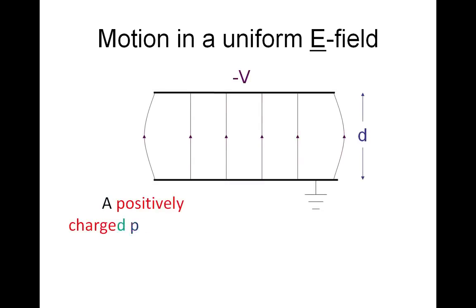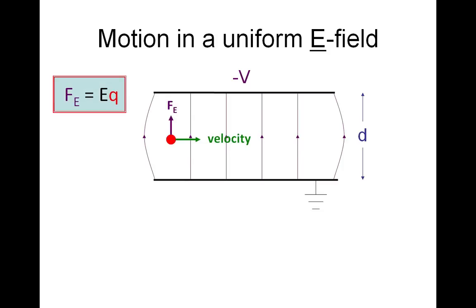Let's look at motion in a uniform electric field. Here we have a positively charged particle entering the field with a velocity to the right. The electric force acting on it is upwards, and that force equals the field strength E times charge Q. Now field strength is V over D, so the force is VQ over D, where D is the separation of the plates.